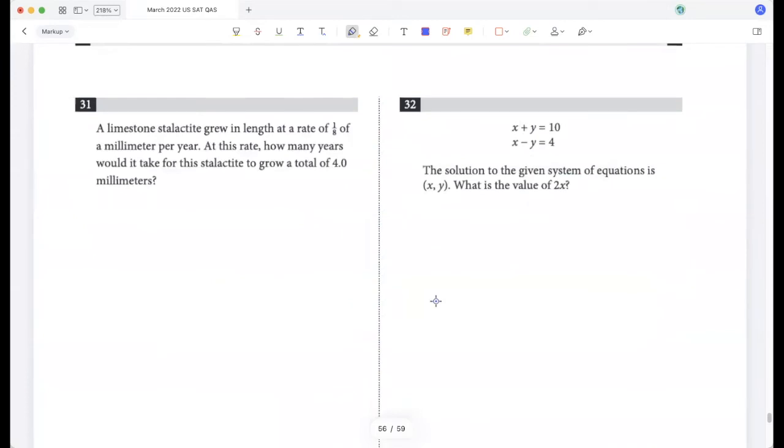A limestone stalactite grew in length at a rate of one eighth of a millimeter per year. How many years would it take for the stalactite to grow a total of four millimeters? One eighth it grows in one year, so one millimeter it grows in eight years, so four millimeters it would grow in 32 years.